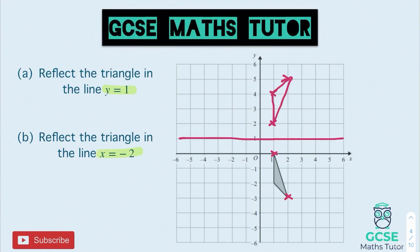For the next one, x equals minus 2 for our line, so we go up through minus 2 on the x-axis and that's what we need to reflect it in. Picking those corners carefully: that is 3 away, so 1, 2, 3 away. We've also got the other one which is 3 away, and our final corner down here which is 4 away — so it's going to be right on the edge of the grid. Connect that all together, join it all up, and we're finished.